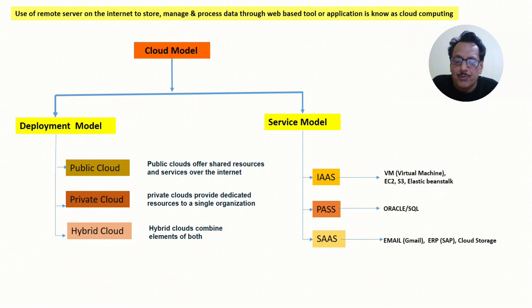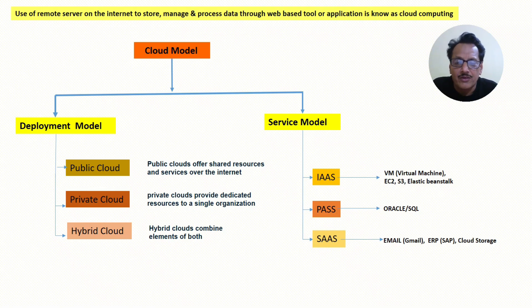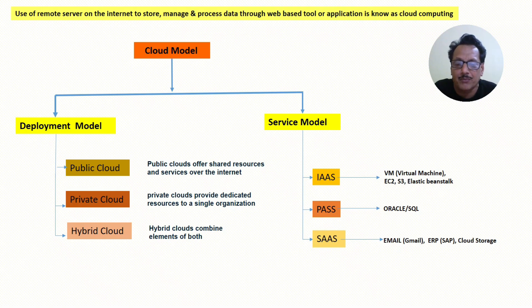Private cloud: if you are using your own dedicated hardware and no other user can install virtual machines on that hardware, that is the private cloud. AWS Outpost is an example of private cloud. It will be dedicated to you only, for your organization only — private cloud provides dedicated resources to a single organization. It is costlier than public cloud, because you have dedicated hardware and the billing will be high in private cloud.